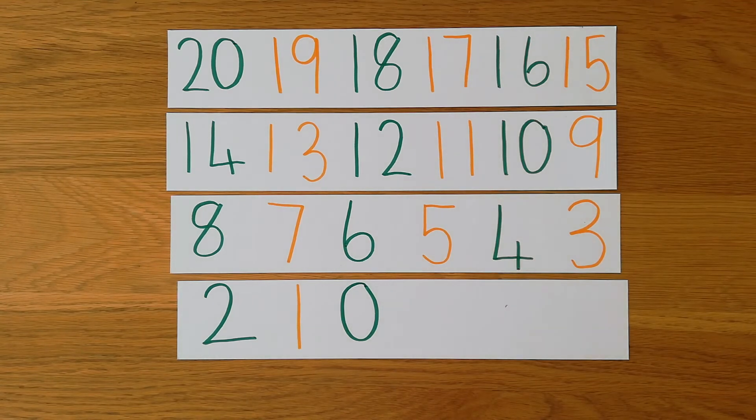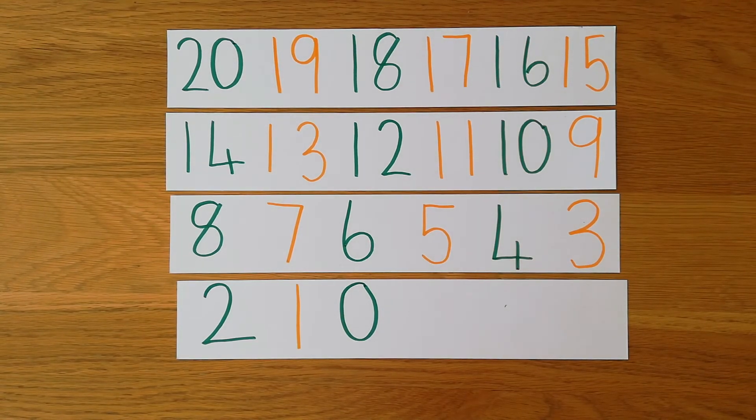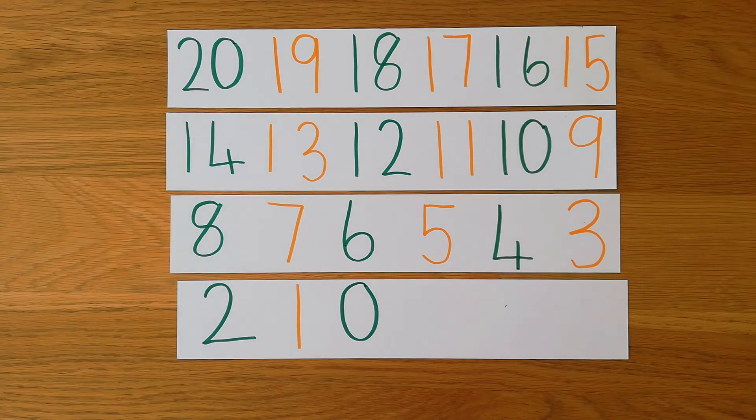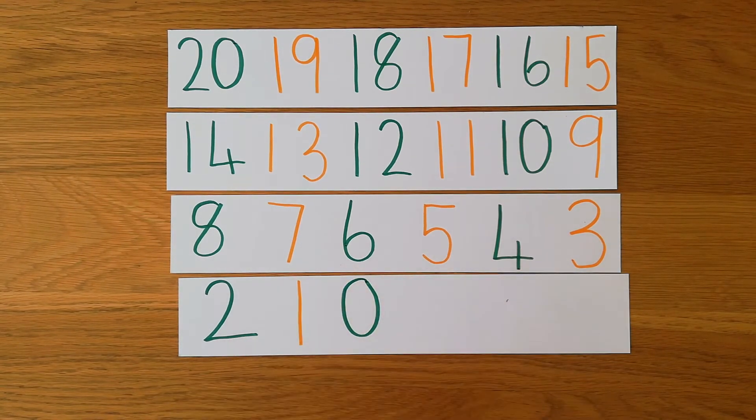Right, what I'm going to do now, boys and girls, is I'm going to quickly cut up these numbers so that I'm going to have one number on a card.